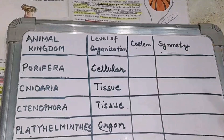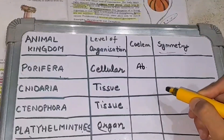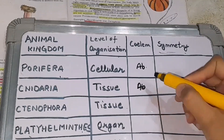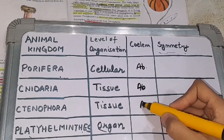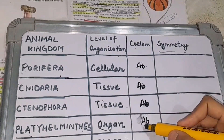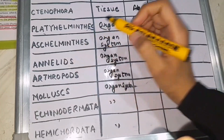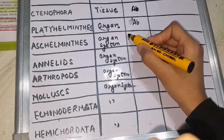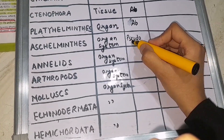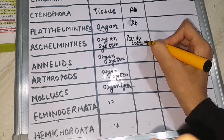Next, we will differentiate on the basis of coelom — whether it is present or not, and what type of coelom it is. So Porifera, Cnidaria, Ctenophora, and Platyhelminthes — in all these four, the coelom is absent, so we call them acoelomate. Next is Aschelminthes, where pseudocoelom is present, so it is pseudocoelomate.